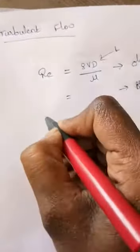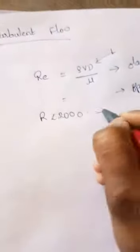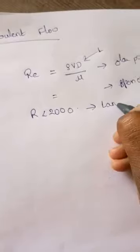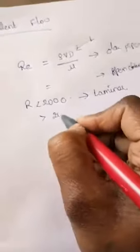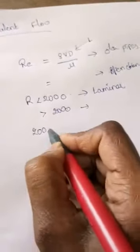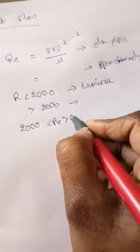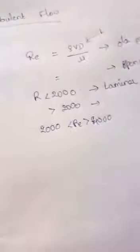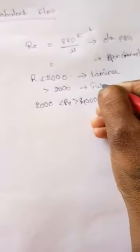Based on the Reynolds number, we can know which kind of flow it is. If the Reynolds number is less than 2000 for circular pipes, that flow is called laminar flow. If the Reynolds number is between 2000 and 4000, that flow is called transition flow.